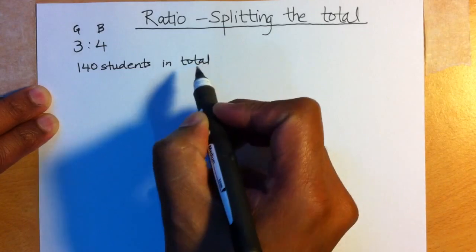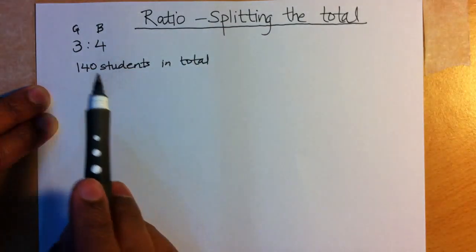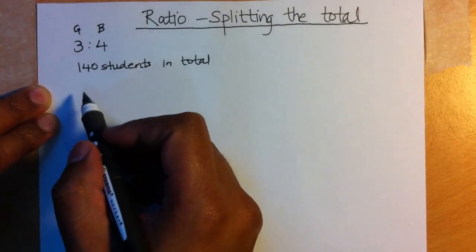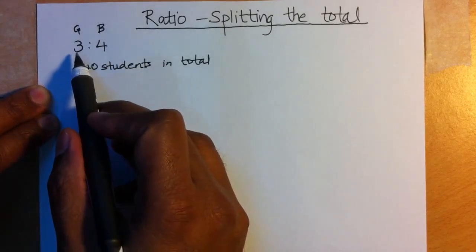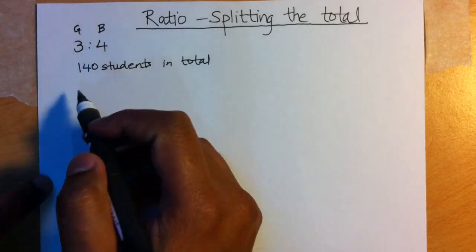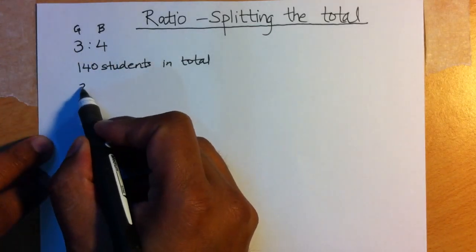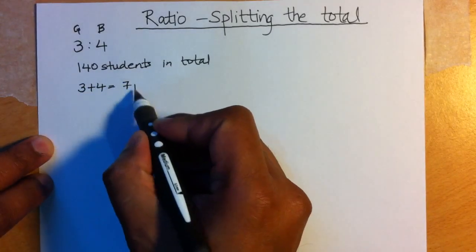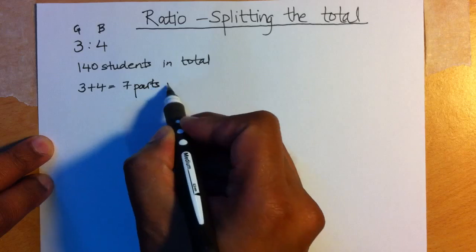So a question could be, how many girls are there and how many boys are there? Okay, so this is quite easy. Let's work out the total number of parts in this ratio question. So we've got 3 parts girls and 4 parts boys, so we've got 3 plus 4 equals 7 parts in total.